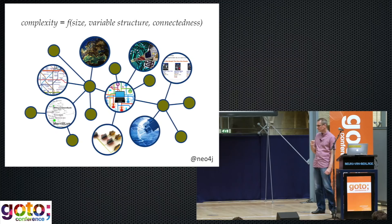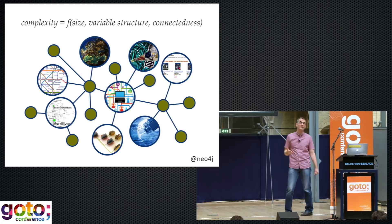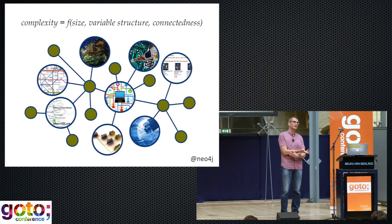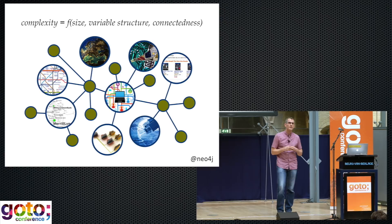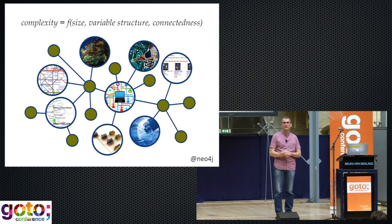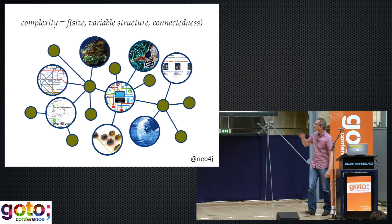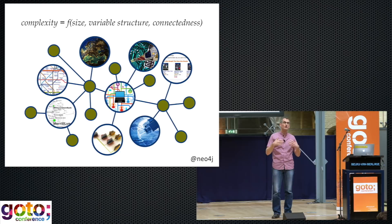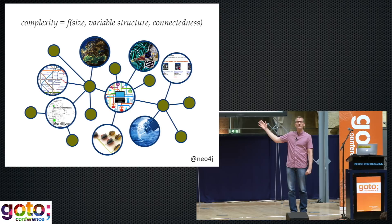The third thing is connectedness. A lot of the really interesting questions we want to ask of our data today require us to understand how the things in our domain are connected — whether two things are connected directly or by way of some intermediaries. And more than that, very often we need to know something about the strength, the weight, or the quality of those connections. To ask and answer really interesting questions, we need to know that things are connected and we need to know something about the strength or quality of those connections.